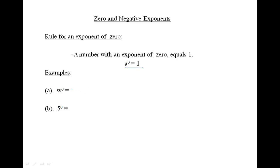Let's look at some examples. W to the power of zero equals one, and five to the power of zero equals one.